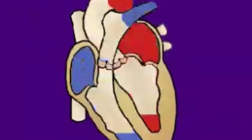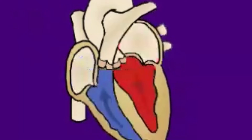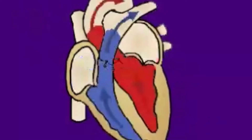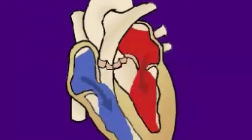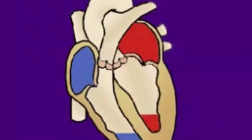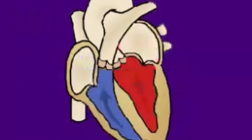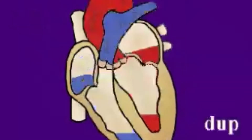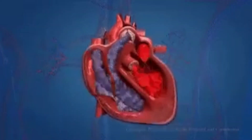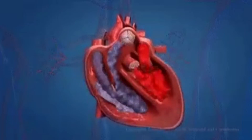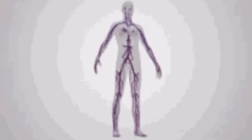Hello students, this is the last video from the chapter Body Fluid and Circulation. In this video I am going to discuss about the circulatory system of human beings, that is double circulation, the circulation through special regions of the body, as well as the regulation of cardiac activity.